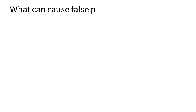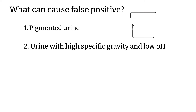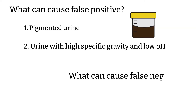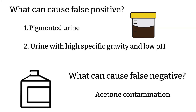For false positive and false negative test results: if the urine is pigmented or has high specific gravity and low pH, these can cause false positive test results. And for the false negative test results, if the urine is contaminated with acetone, the acetone can give a false negative result.